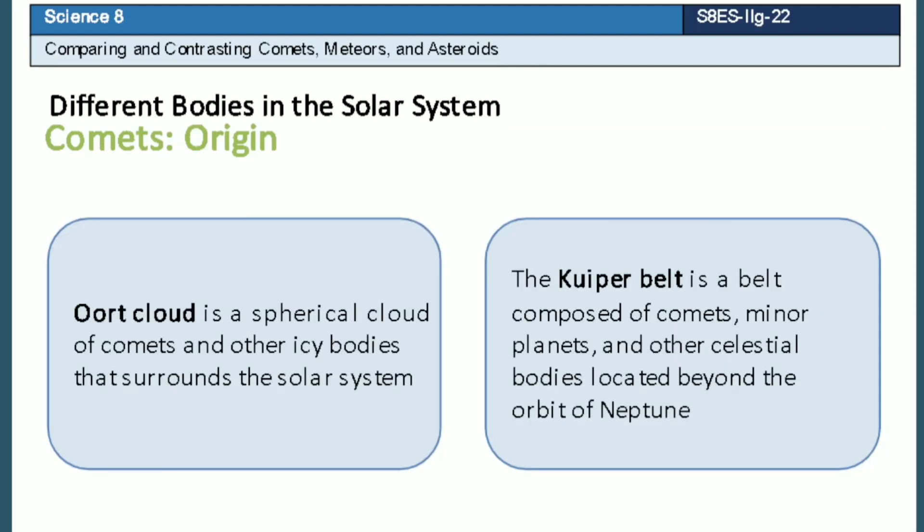The comets originate from the Oort cloud and the Kuiper belt. The Oort cloud is a spherical cloud of comets and other icy bodies that surrounds the solar system. The Kuiper belt is a belt composed of comets, minor planets, and other bodies located beyond the orbit of Neptune.